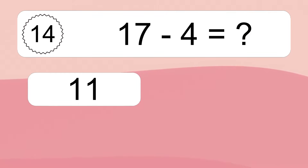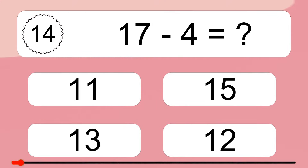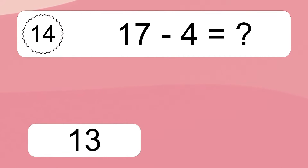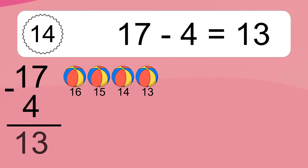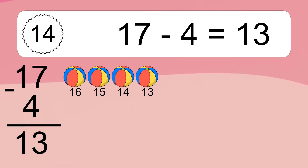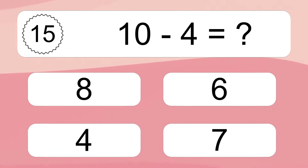17 minus 4 equals what? 17 minus 4 equals 13. Let's count it: 16, 15, 14, 13.